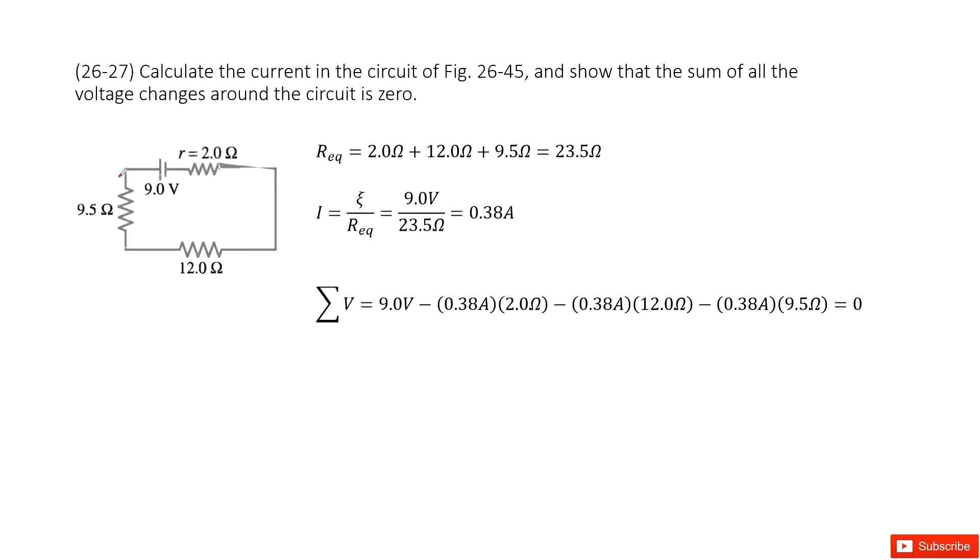We look at these circuits. This is a simple circuit. We have the battery, internal resistance, and then connected in series with two resistances, 9.5 ohms and 12 ohms. Now we need to calculate the current in this circuit and show that the sum of all voltage changes around the circuit is zero.